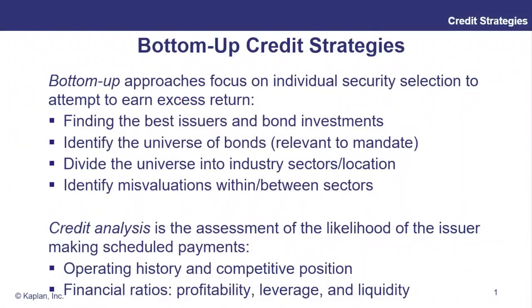A fixed income manager — and this isn't unique to fixed income, this could be any asset class — can either be bottom-up or top-down with regards to how they construct their portfolio. A bottom-up manager tends to look at individual securities and their merits first, rather than considering the macro picture, the top-down picture, the big picture of a market, sector, industrial sector, or class of issuer. We're really focusing on finding the best issuers and then the best individual bond investments, while still defining our universe and dividing it into sectors, locations, and considering misvaluations between sectors, geographies, industries, or credit ratings.